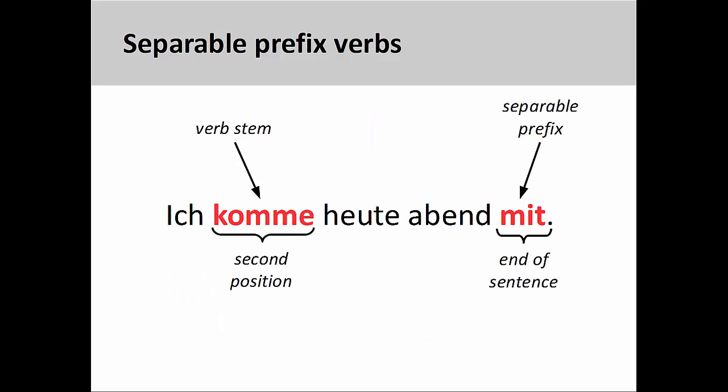As we saw in the presentation on separable prefix verbs, the root of the verb comes in the second position, and a separable prefix comes at the end of the sentence or clause. Ich komme heute Abend mit — I will come along this evening. You may want to review the presentation on separable prefixes, or, if you can't remember what the second position is, on German syntax before continuing with this one.